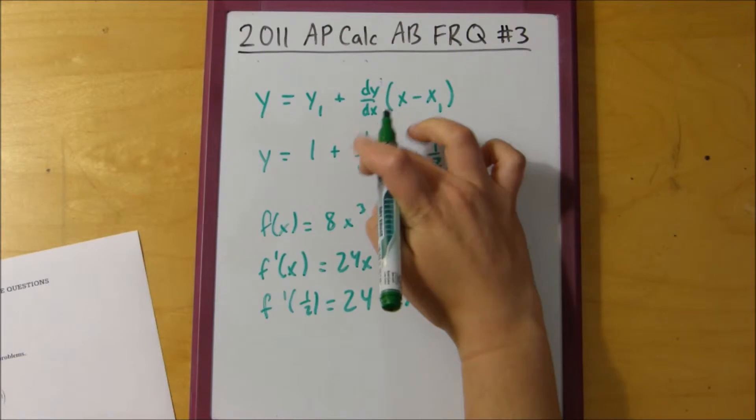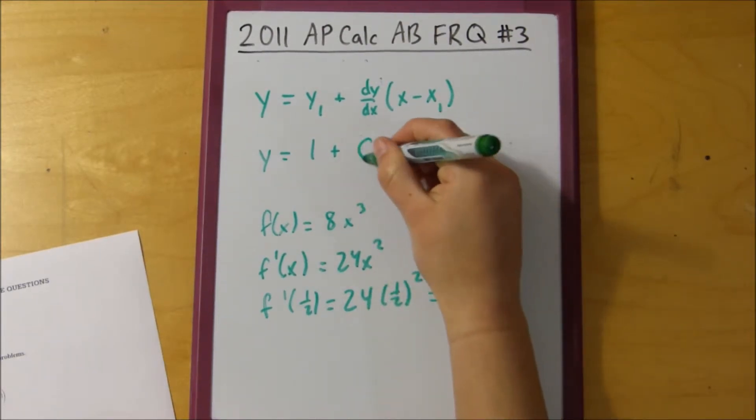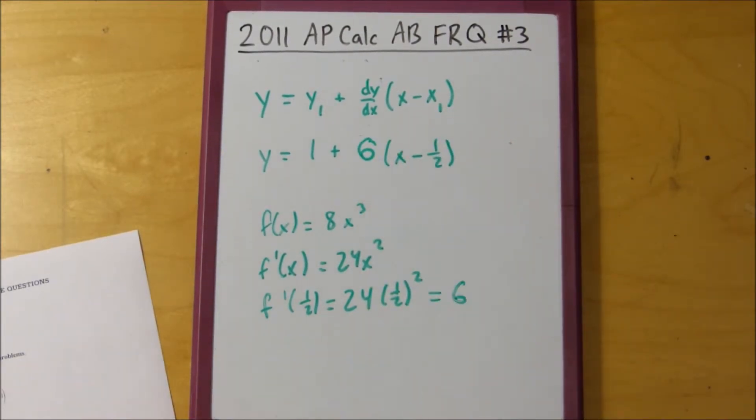So then we can just replace this with 6, and there is our tangent line equation. Just pretty simple.